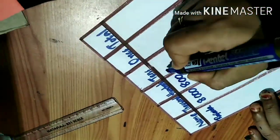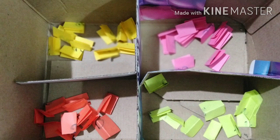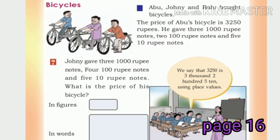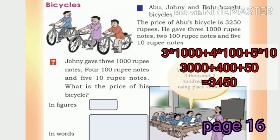Write that in the first paper: three thousand two hundred fifty. He gave three thousand rupee notes, two hundred rupee notes, and five ten rupee notes. Now the question is: Johnny gave three thousand rupee notes, four hundred rupee notes, and five ten rupee notes. What is the price of his bicycle?